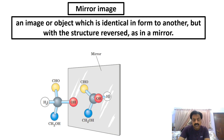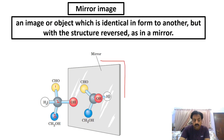Now dear students, let's understand what a mirror image means. We have taken a triose carbohydrate here. This is carbon one, this is carbon two, and this is carbon number three. We placed this triose carbohydrate in front of a mirror, and now we can see the mirror image of this triose — carbon one, carbon two, carbon three.